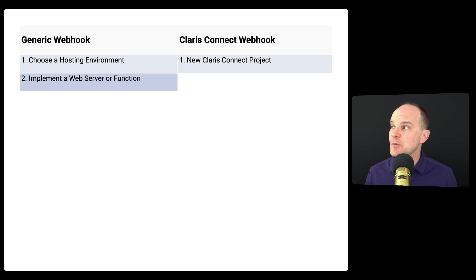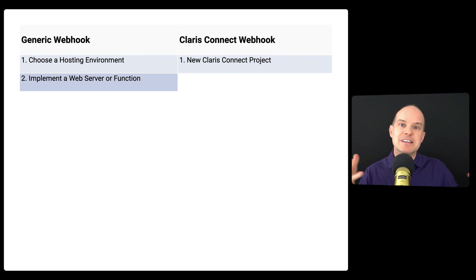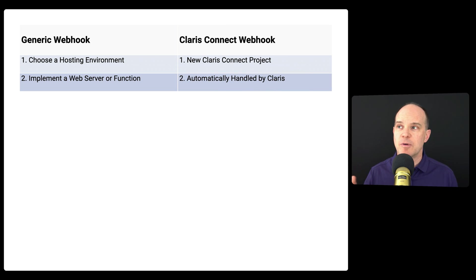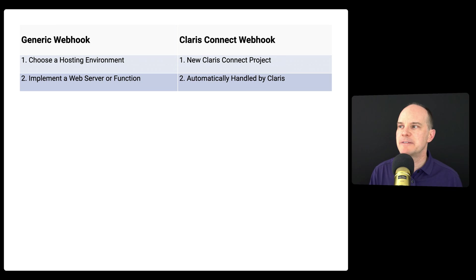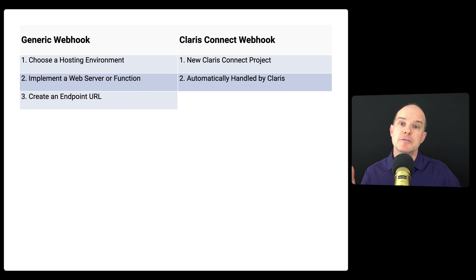Next, we have the implementation of the web server or function. Besides getting a server set up and configured, you need to get that machine publishing an open socket or a page that can receive incoming information. That page needs to be locked down with a dedicated SSL certificate, and it requires procuring a domain and understanding all the ins and outs of that. With Claris Connect, that's all handled by Claris — the one click to create a new project sets up the environment, all the security, domain construction, and how the links are generated.